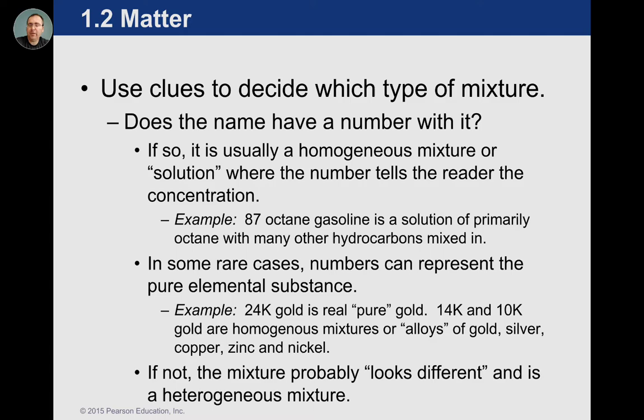As we look at clues for mixtures, sometimes we can look for numbers. Numbers are often given to solutions. Gasoline is a great example because gasoline has numbers — the different choices of 87, 89, or 93 octane tell us that gasoline has a mixture of something. We don't need to know in chapter one what that mixture is. Maybe you know a little bit about gasoline because you like to race cars and know that octane makes it go faster — it is a mixture of octane — but the fact that it is a mixture is what we're after in this chapter.